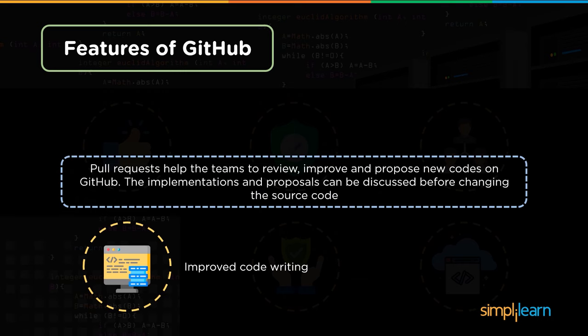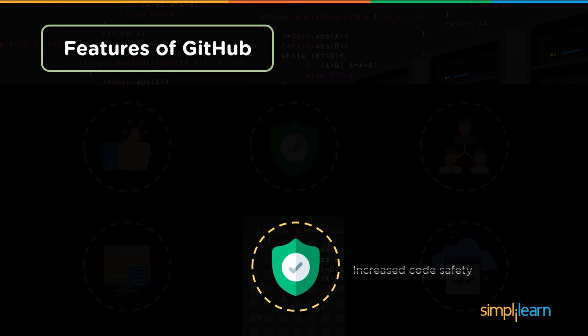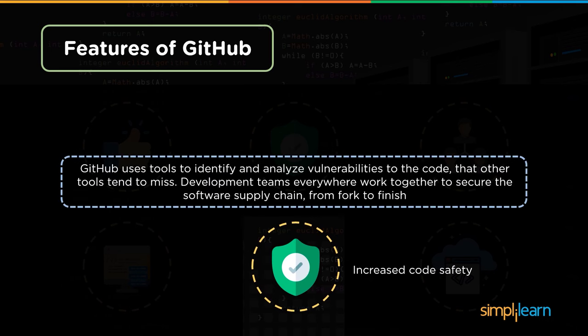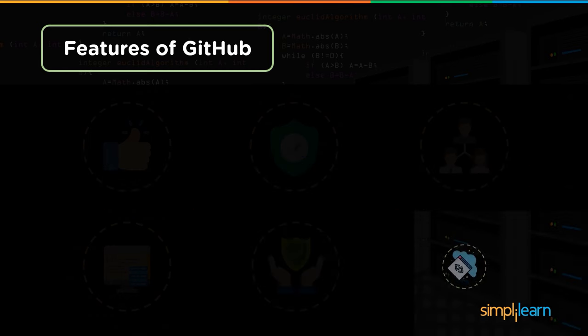The next feature is improved code writing. With the help of GitHub, the quality of code has significantly increased. Using the git pull command, one can review, improve, and propose new code. Suggestions or modifications may be discussed before changing the original code. The next feature is increased code safety — GitHub uses CodeQL, which is the industry's leading semantic code analysis engine, and it tends to find risks in code that other tools tend to miss.